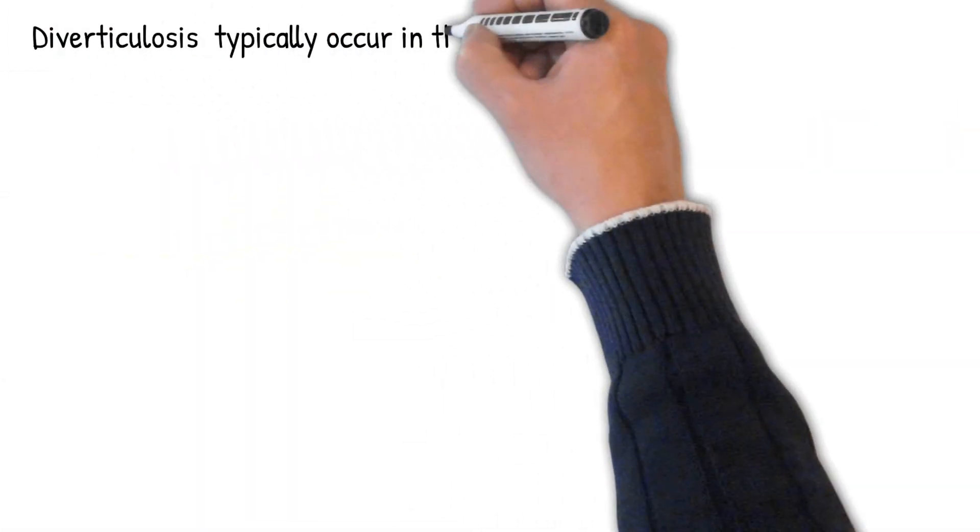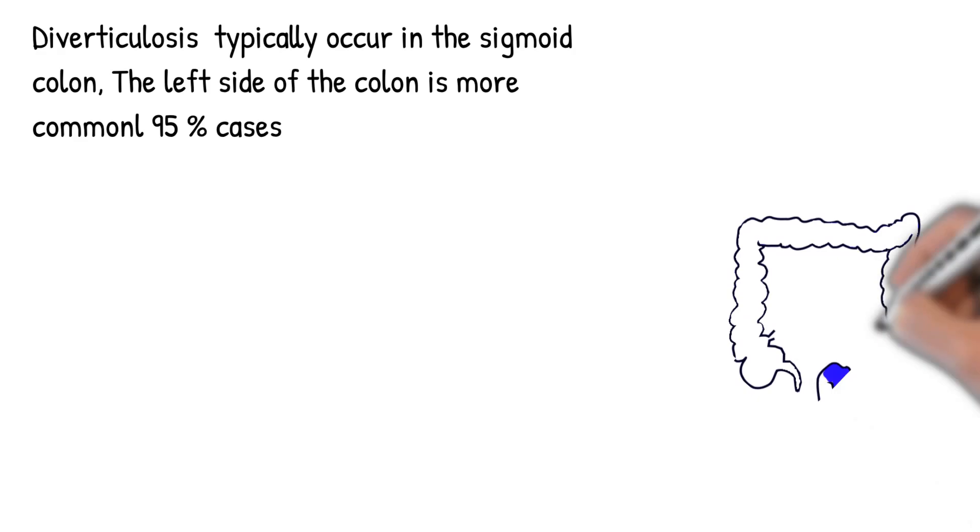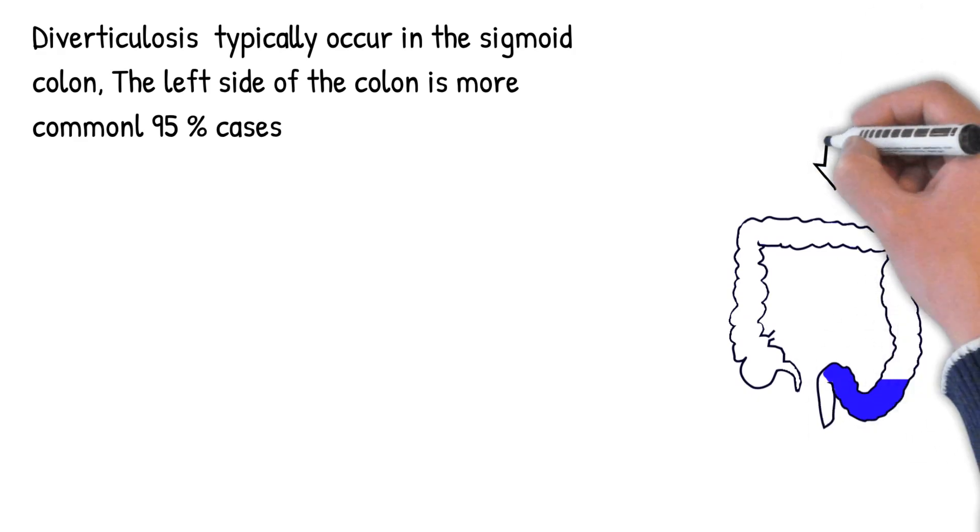Diverticulosis typically occurs in the sigmoid colon. The left side of the colon is more commonly affected in the United States while the right side is more commonly affected in Asia.